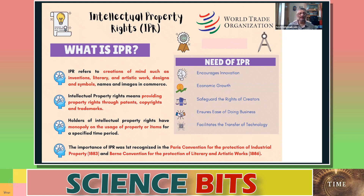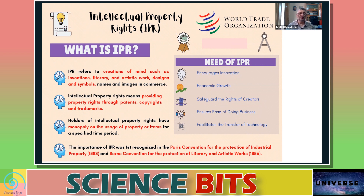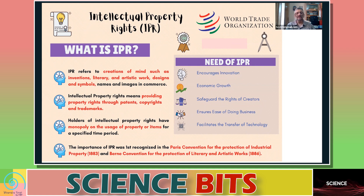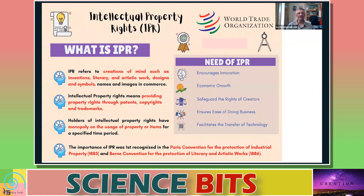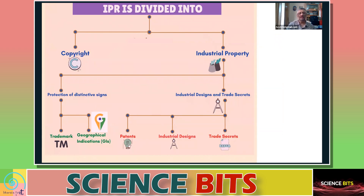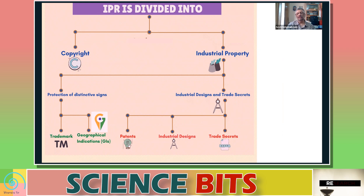There is an international convention which was established in Paris in 1883 — that is the starting point of intellectual property rights internationally. Similarly, for artistic work, the Berne Convention of 1886 is the founding stone. These are all part of the international regime. If you look at IPR broadly, one can divide it into two things: copyrights and industrial property.